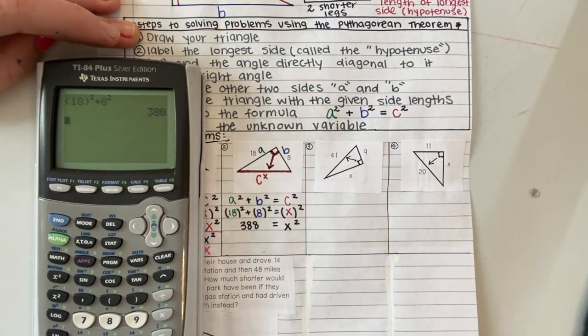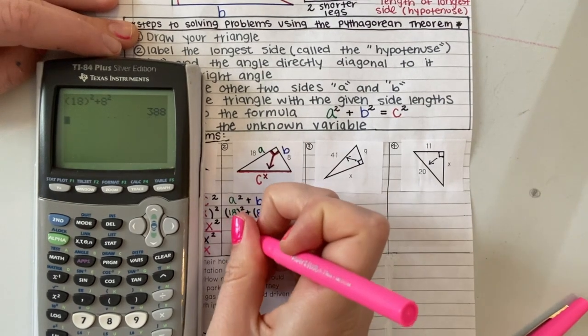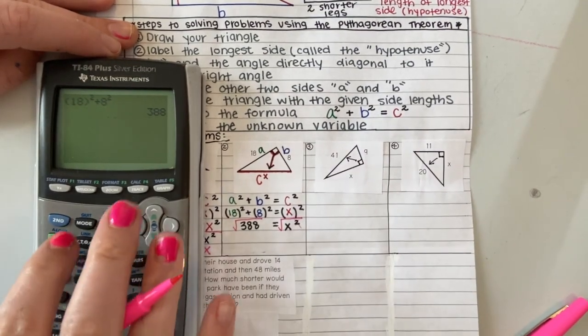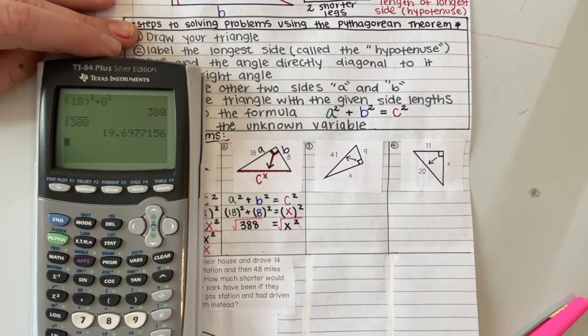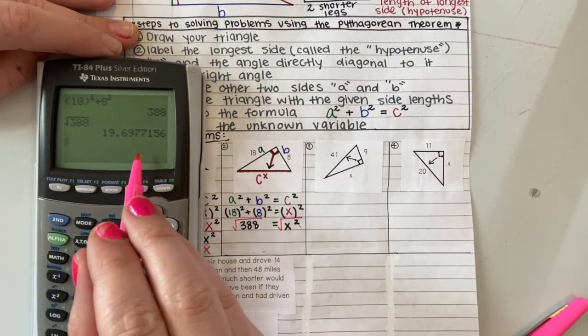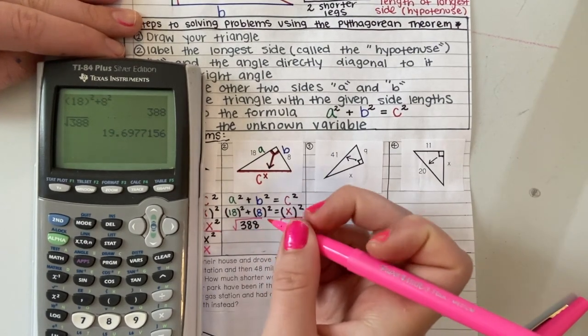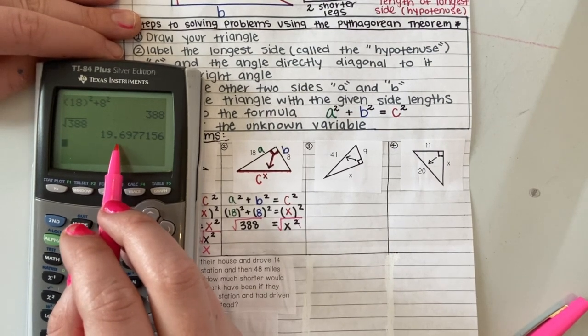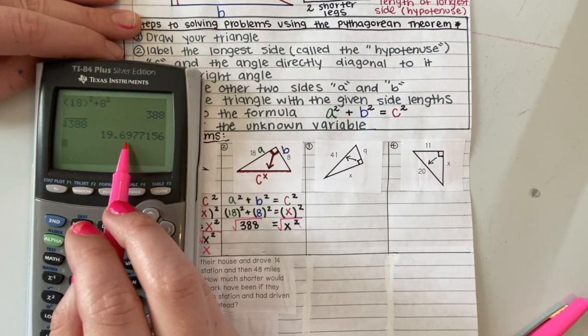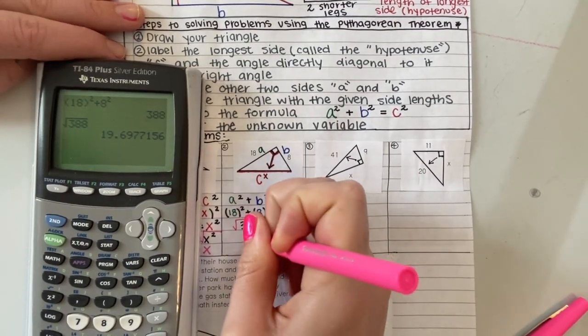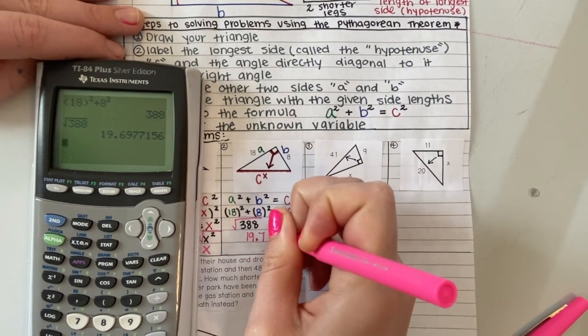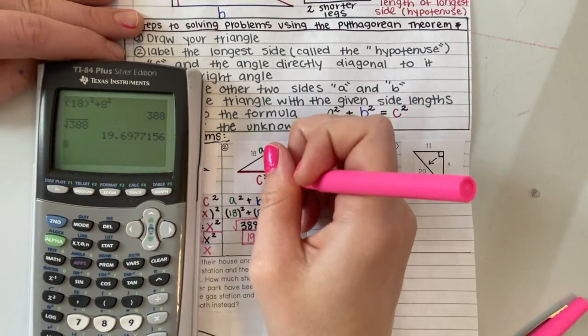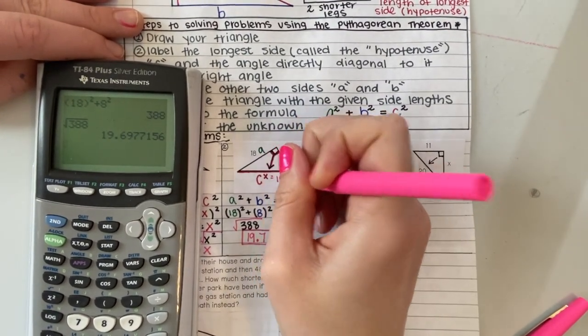Notice the X is not totally by itself, so we want to take the square root of both sides to get rid of this little 2, and we get 19.6977156. So I'm going to round to the nearest tenth, which is just one space to the right of the decimal point. Because my next space is a 9, I'm going to round up and I get 19.7. So that means that the length of this last side is 19.7.